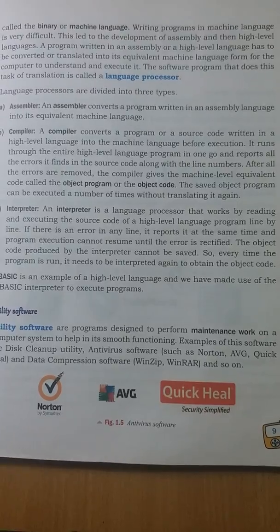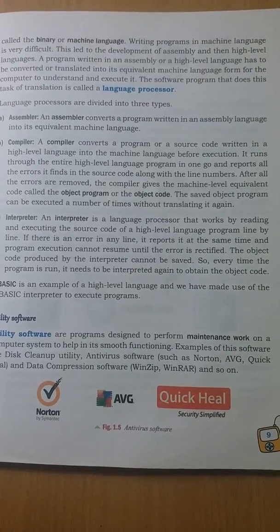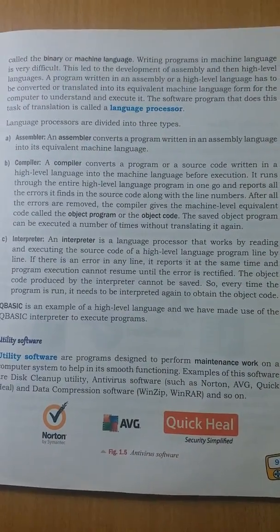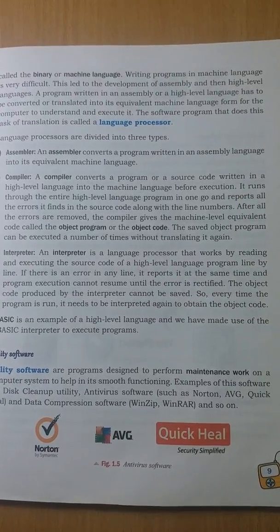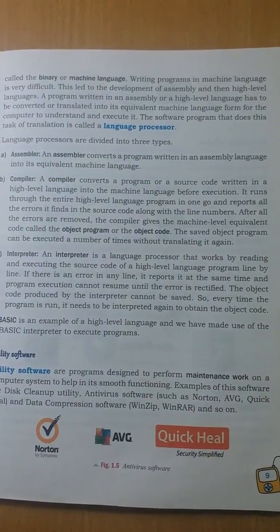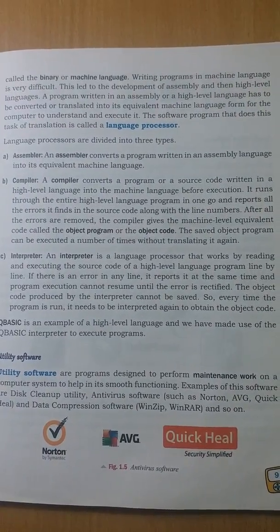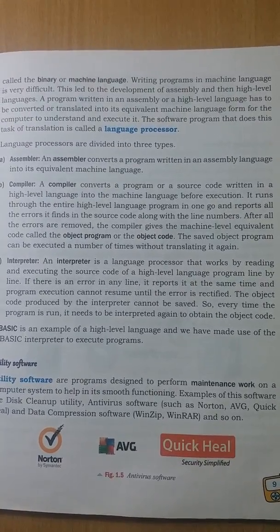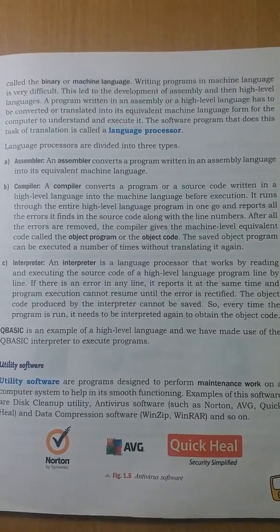Another type of translator program is the interpreter. It also converts high-level language programs into machine language, but the difference is that it converts the program line by line. It reads the first instruction, checks whether it is correct, and if correct, translates it into machine language and gives output. Then it reads the next line. If there is an error, it displays the error to the programmer to rectify. Since it works line by line, it is a little bit slower.